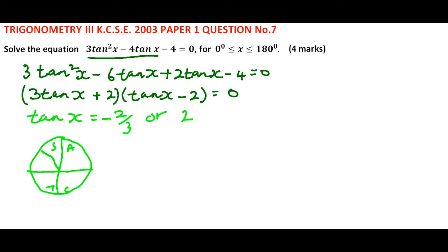If tangent of x is −2/3, then the angle is in the second quadrant and the fourth quadrant.